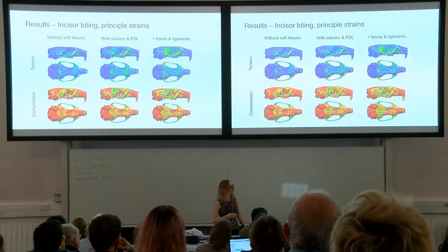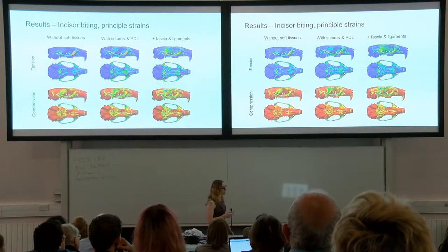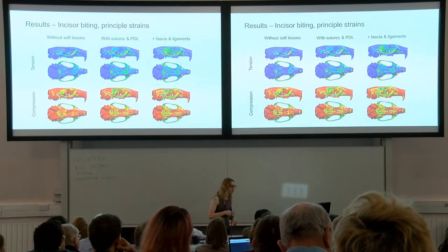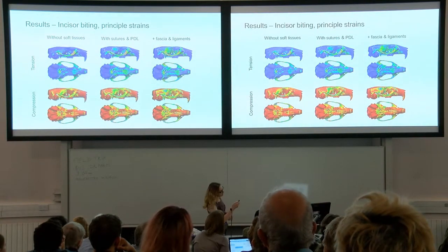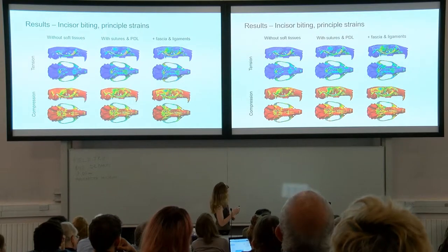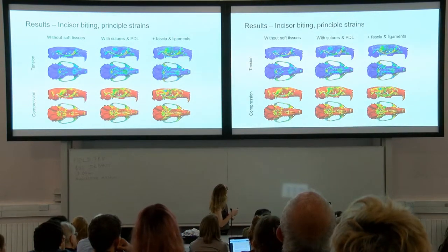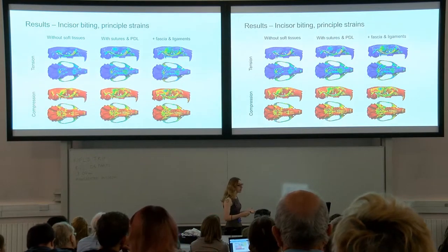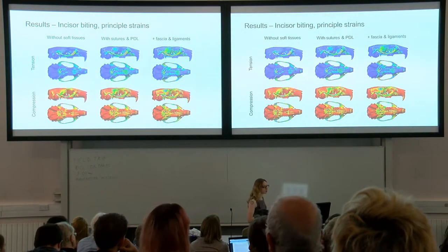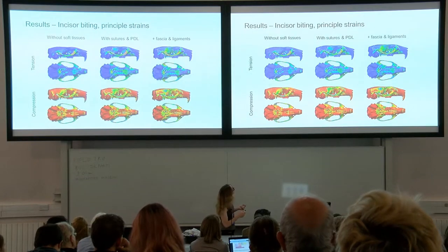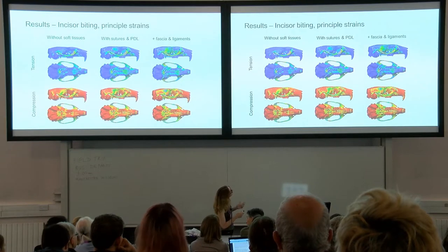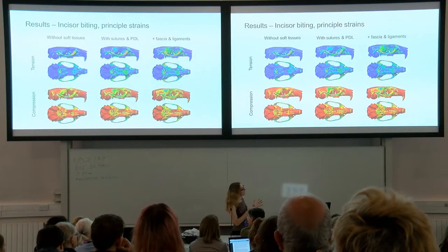Now for some results. I'm going to focus on just incisor biting - we did model incisor biting as well as molar biting along the tooth row, but in the interest of time I'll just focus on the incisors. We have three models: a model with no soft tissues and no sutures, which is more like models used in comparative studies and is our most simple model; then a model with sutures and periodontal ligaments; and finally on the left, the same model with sutures, periodontal ligament, fascia and ligaments.